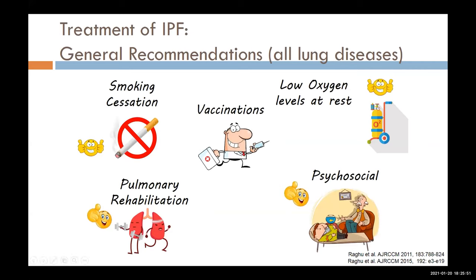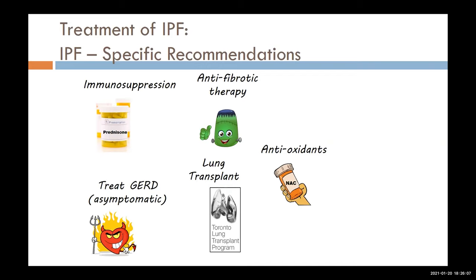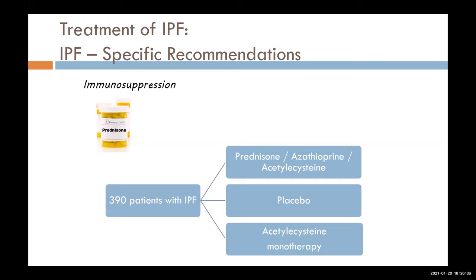Those are my general recommendations that apply to patients with all kinds of lung diseases. Next we're going to talk about four areas where there are IPF-specific recommendations. First, we talk about immunosuppression — drugs like prednisone, medicines that suppress your immune system. There was a time where we thought these drugs would be really helpful because we thought IPF might be your own immune system attacking your lungs.